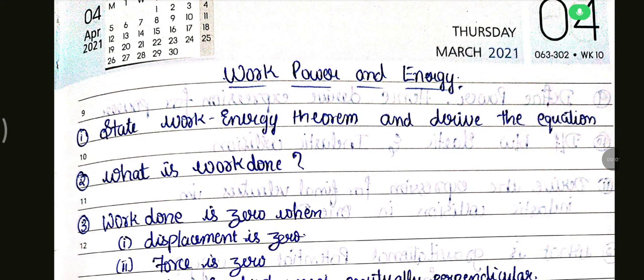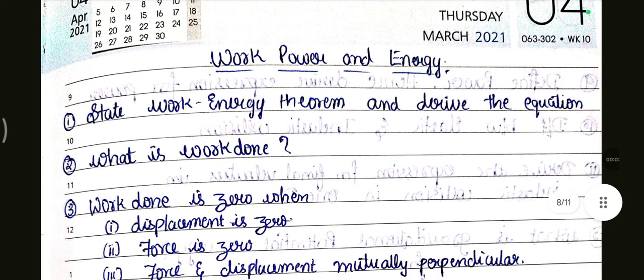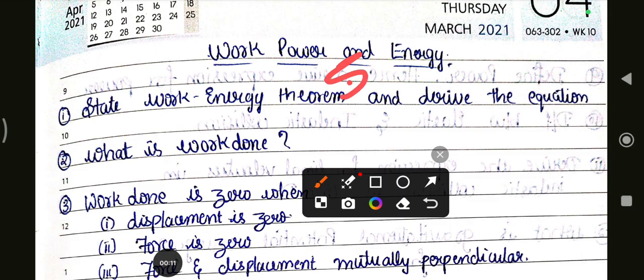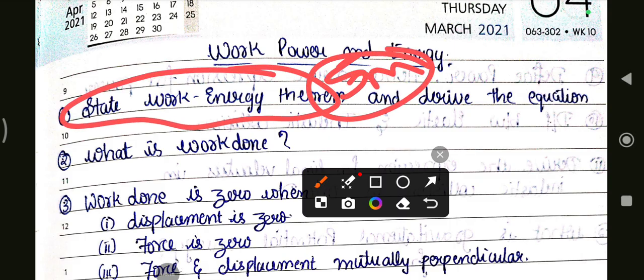Power and Energy chapter important questions. First of all, state Work-Energy theorem and derive the equation. This is very very important for your 5 mark question. If you have 5 marks, you can write it like this: state Work-Energy theorem and derive the equation.